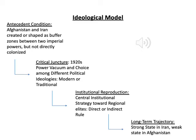Modernists want to usurp the power of all regional elites, who are mostly traditional landowners or tribal leaders. They want to usurp them and replace them with central state institutions.